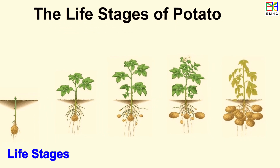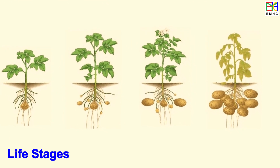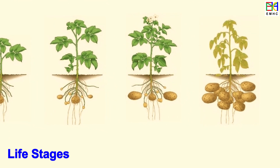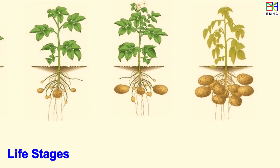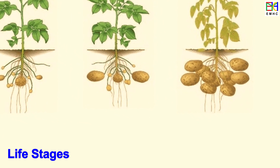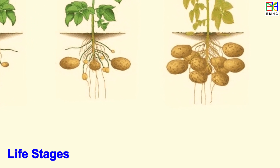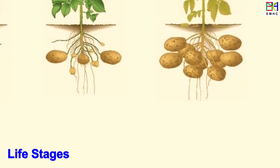The life of potato can be divided into five growth stages: sprout development, vegetative growth, tuber initiation, tuber bulking, and tuber maturation.